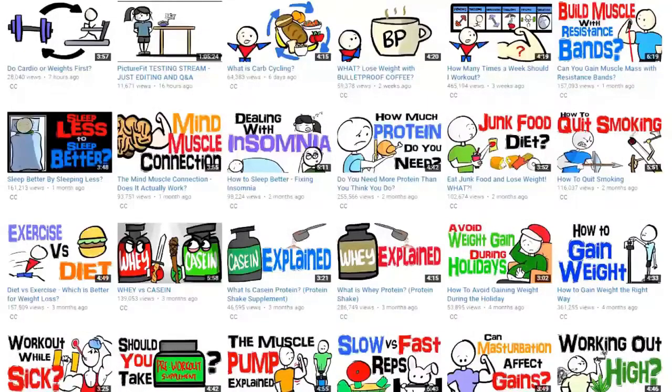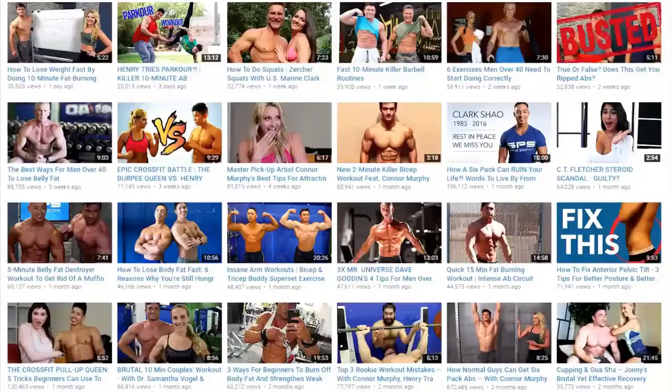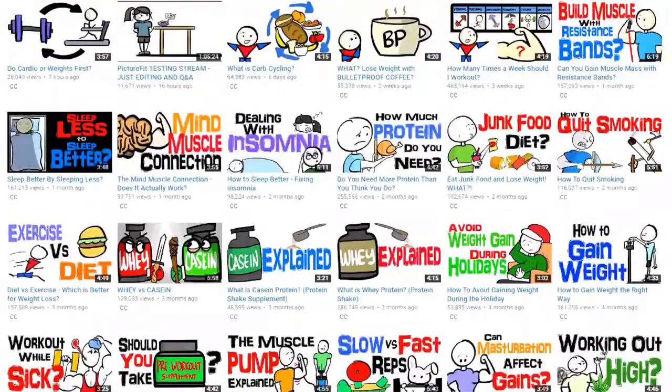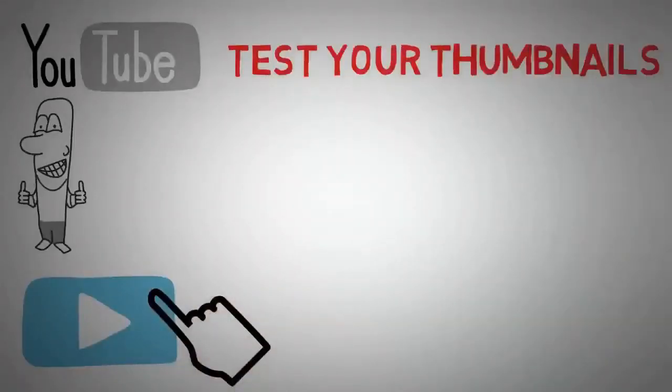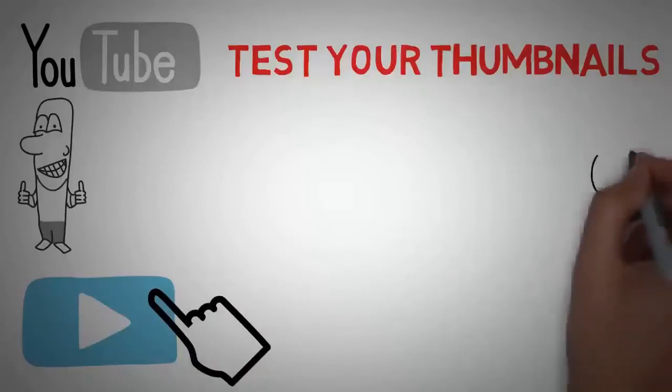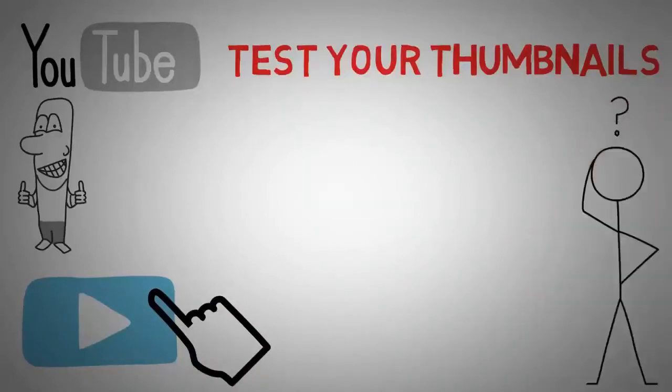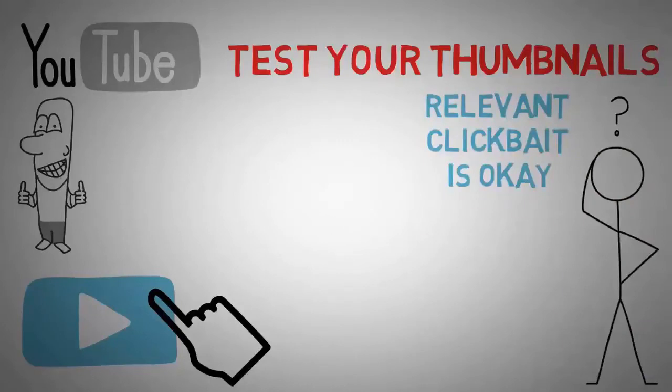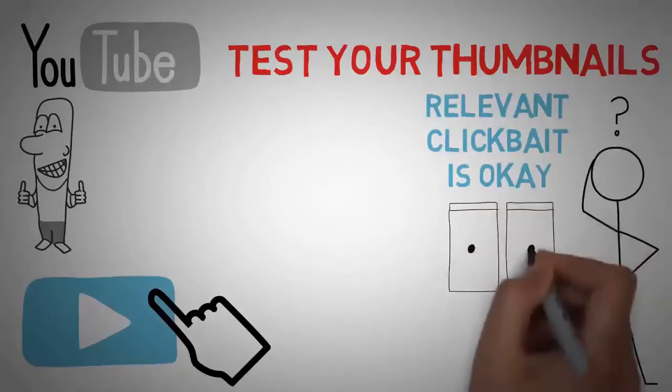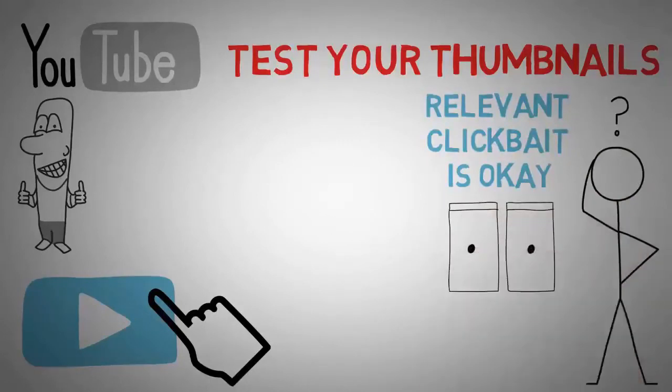So the first tip is to make better titles and thumbnails. Make them actually want to be clicked on. Take a look at these two channels - which one would you watch more of? You have to split test some thumbnails and titles with your friends. Show them two or three pictures or two or three titles and say which one would you click on first. Eventually you'll get the hang of creating clickbait images that are still relevant. Now clickbait is okay - you have to create a thumbnail that grabs attention in this super noisy world, but what's not okay is misleading people. Understand the difference and execute.